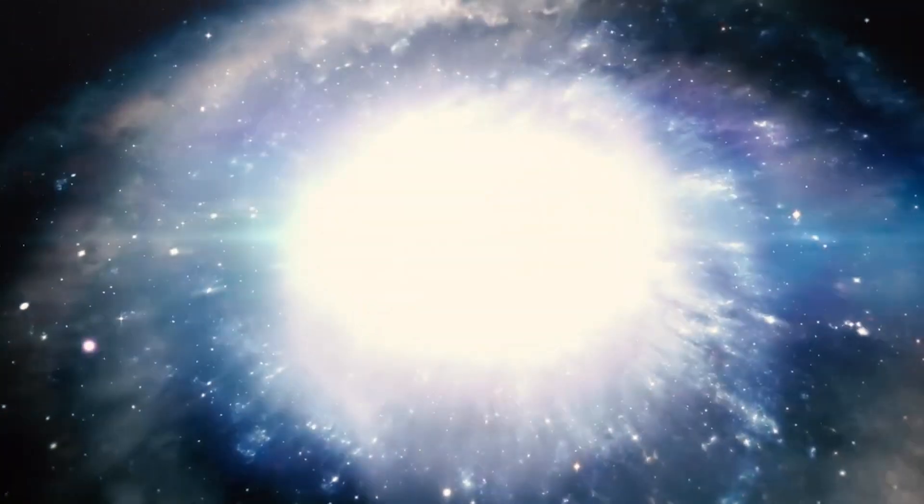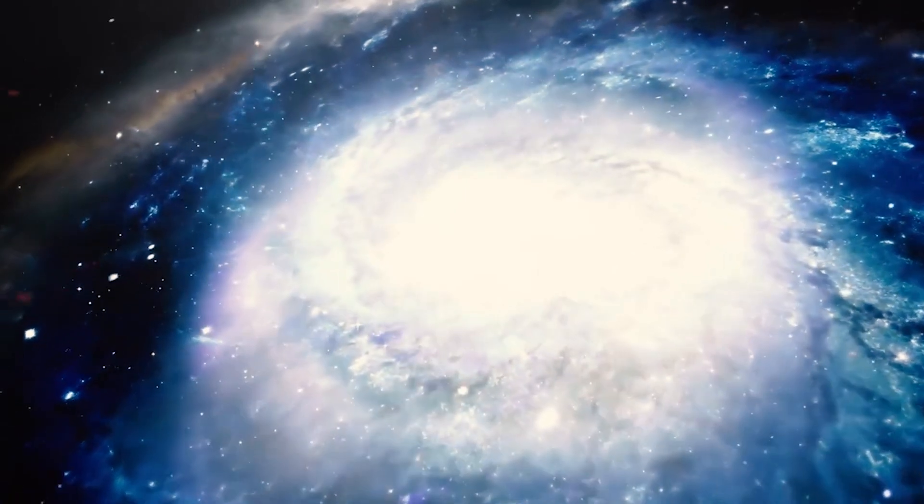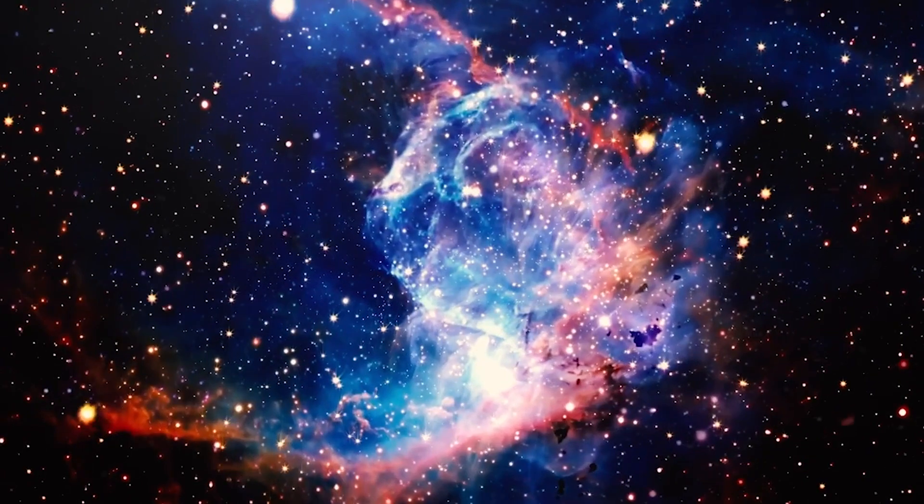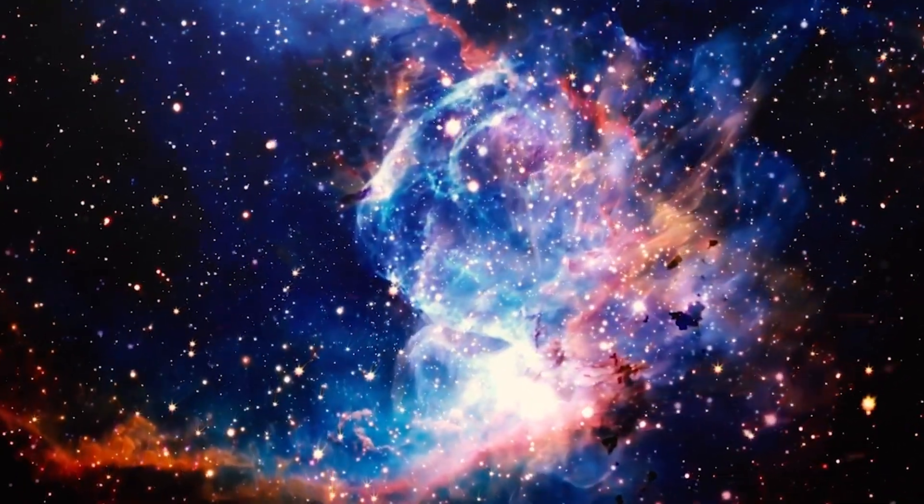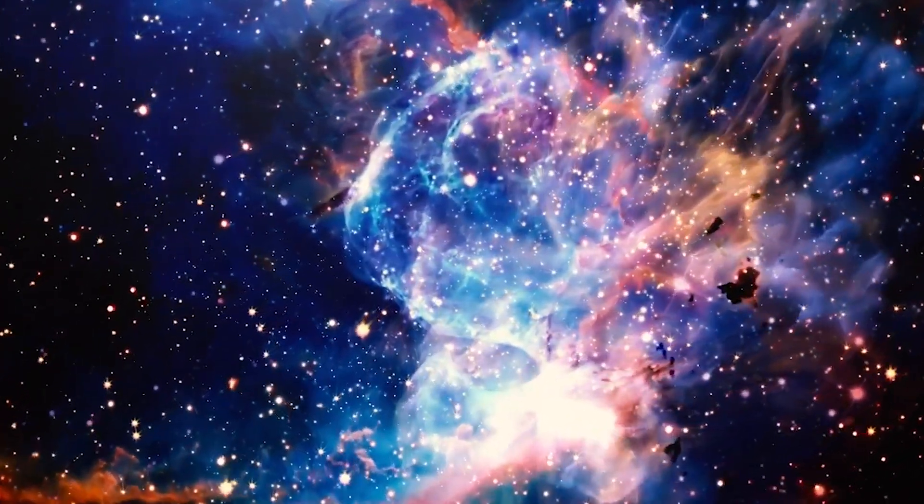A difference between that star with Betelgeuse is their type of supernova explosion. DES-16C2NM is a type 2 supernova, which occurs when a massive star runs out of fuel and collapses on itself, causing a catastrophic explosion. Betelgeuse, on the other hand, is expected to eventually become a type 2 supernova, but it is currently classified as a red supergiant.